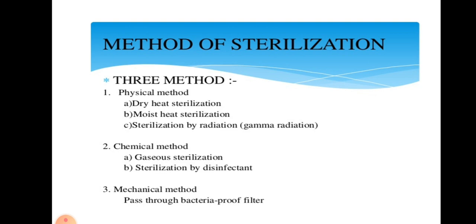Methods of sterilization. There are three major methods of sterilization: physical method, chemical method and mechanical method. Physical method is in turn of three types: dry heat sterilization, moist heat sterilization and sterilization by radiation. Chemical method has two headings: gaseous sterilization and sterilization by disinfectants. Mechanical method is by filtration.